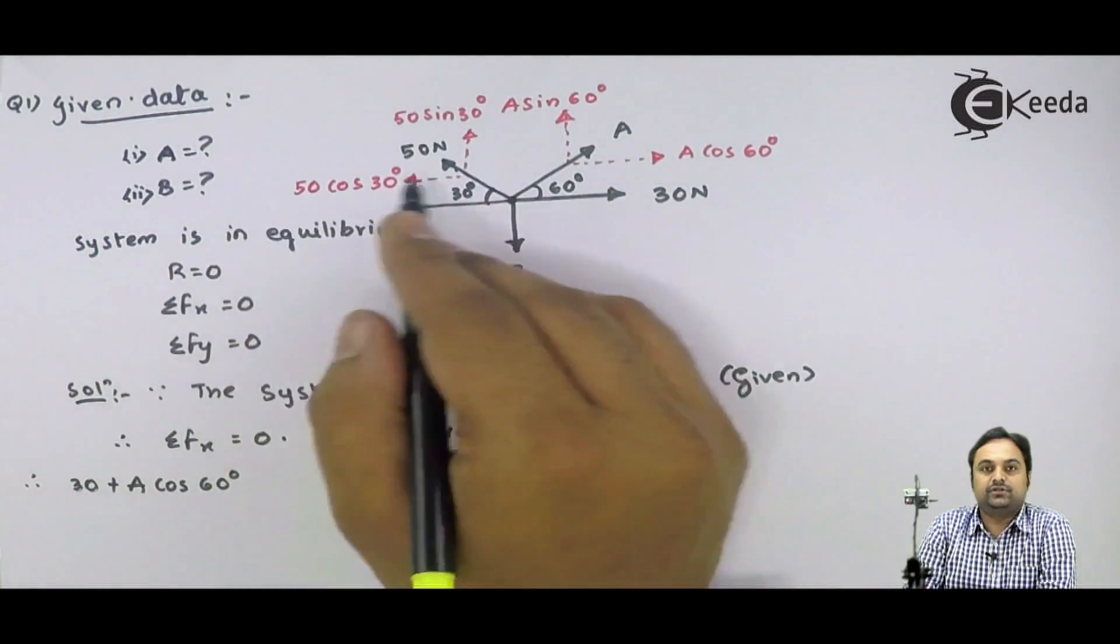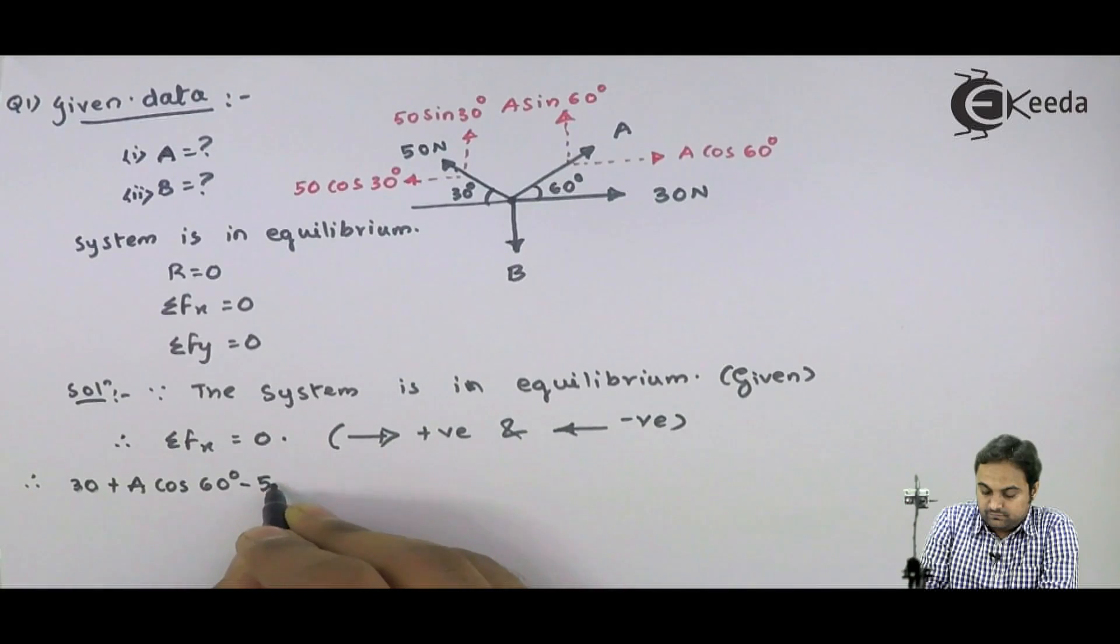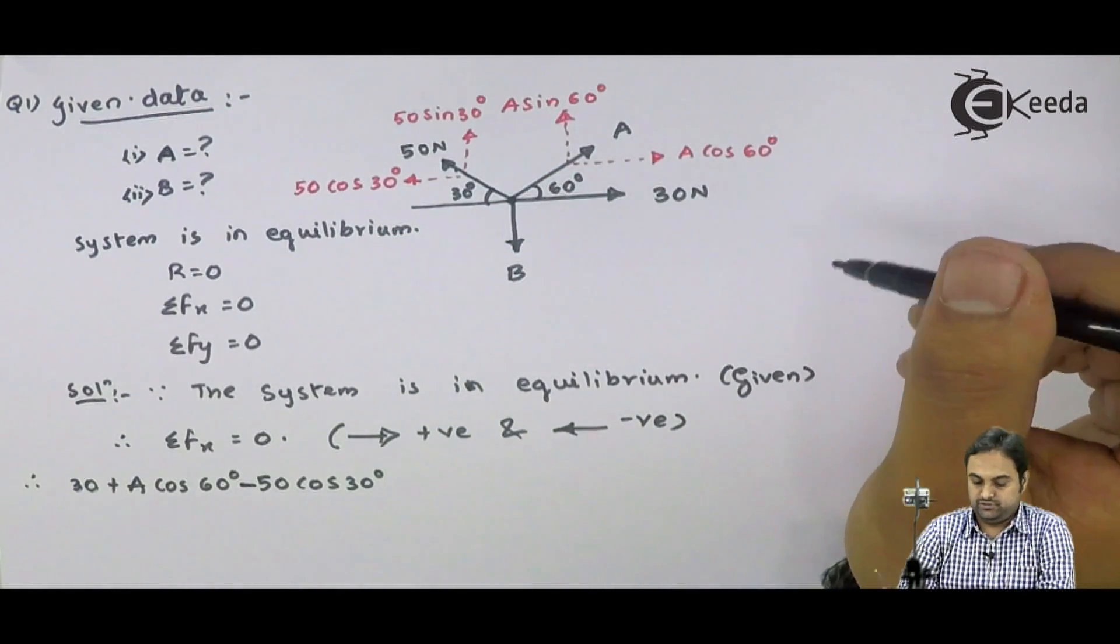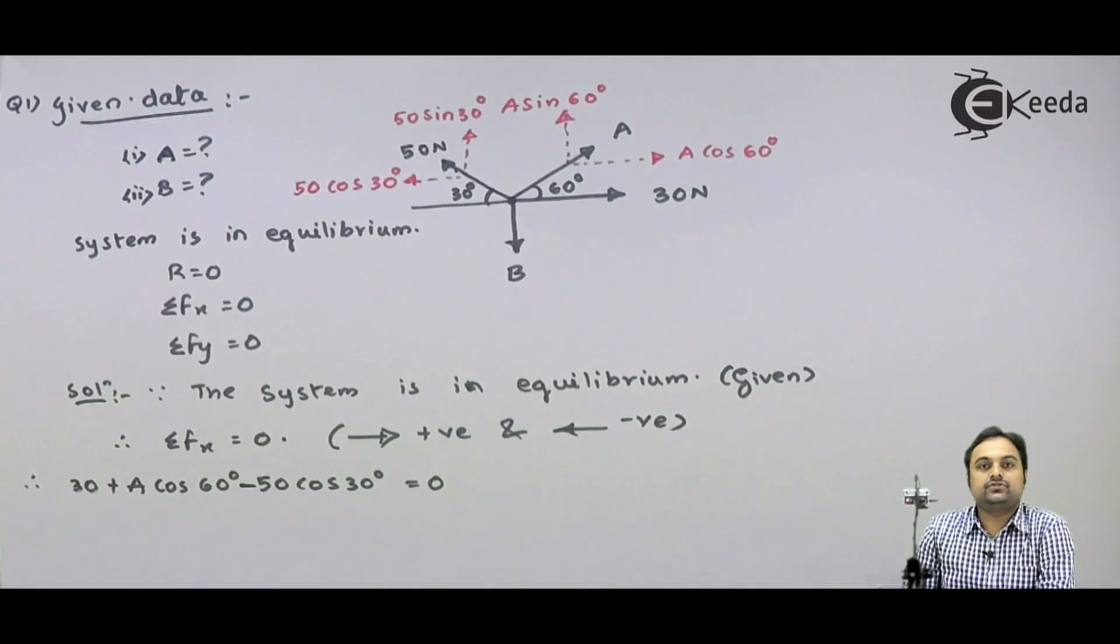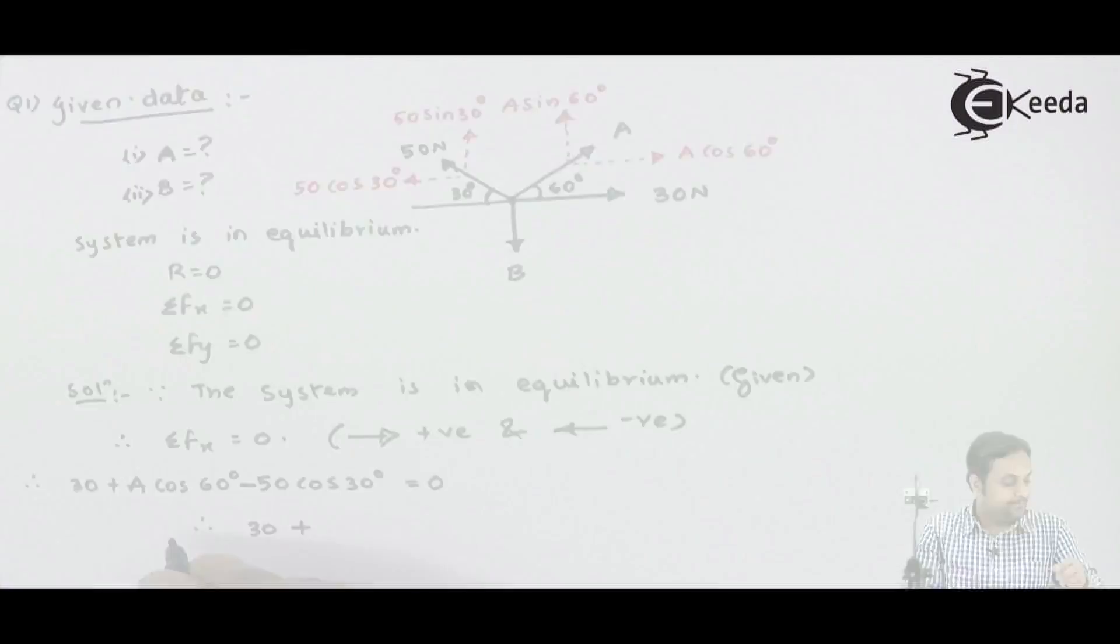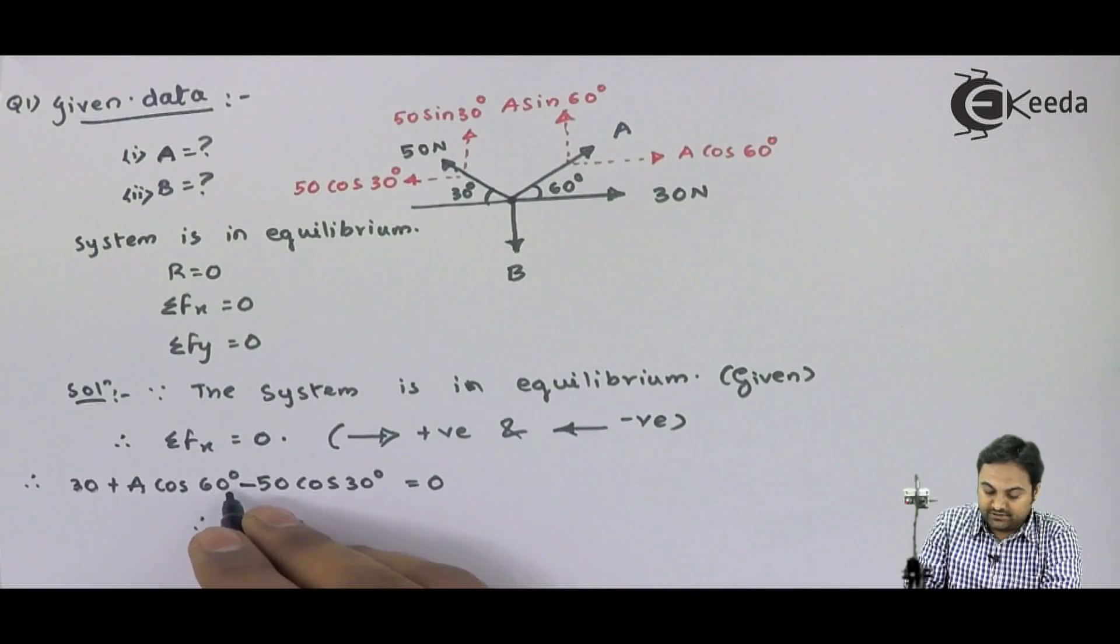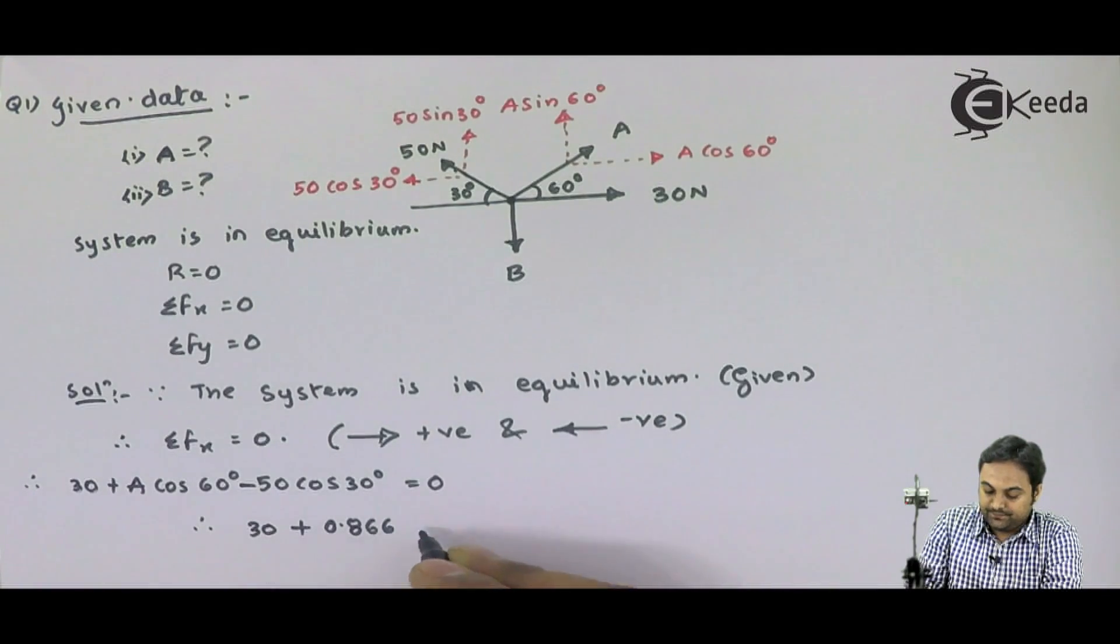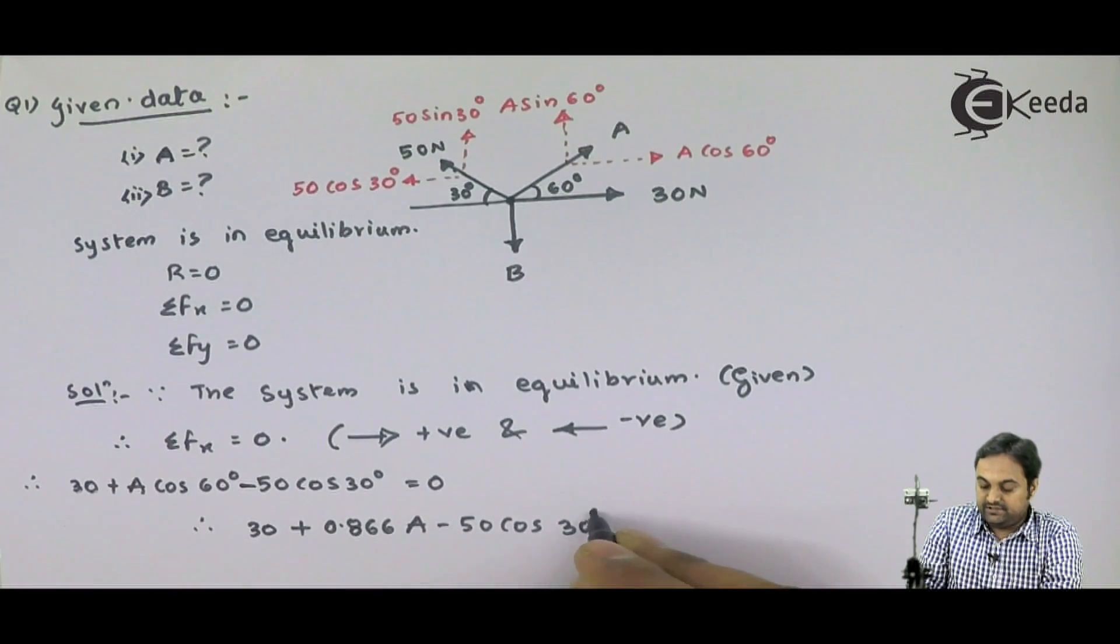50 cos 30 is towards left, so negative. We have three horizontal forces. They are equal to 0 because the system is in equilibrium. Hence, here it is 30 plus A cos 60, and the value of cos 60 comes out to be 0.866 into A minus 50 cos 30, that is equal to 0.